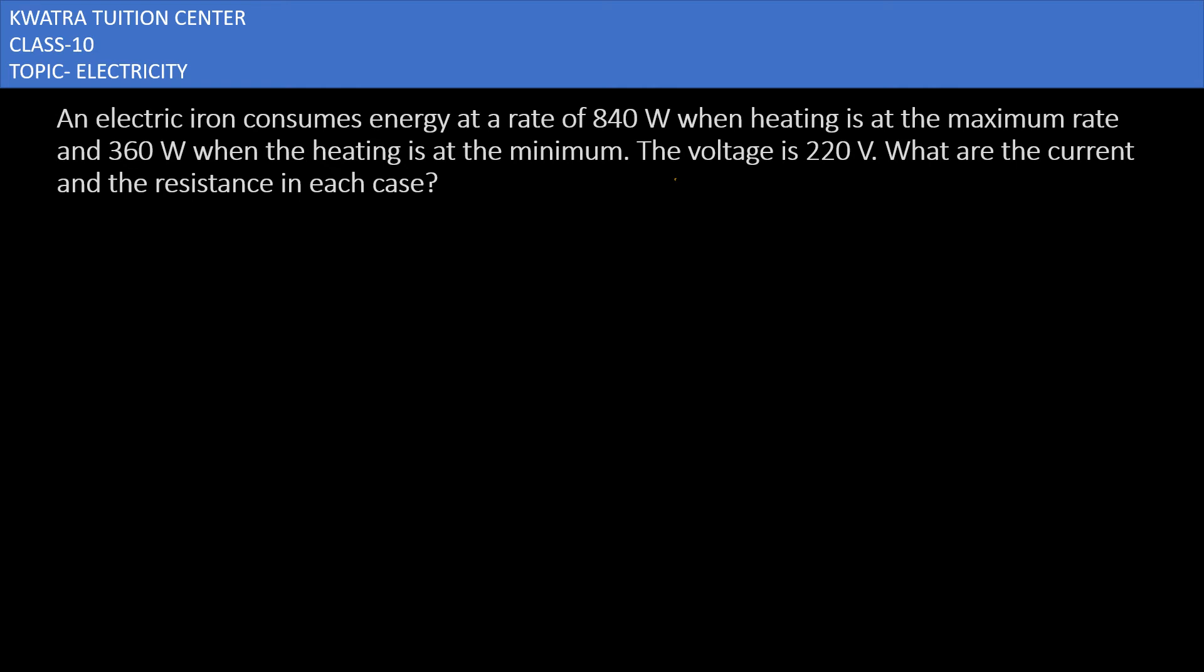Let's start with a new question. It says an electric iron consumes energy at a rate of 840 watts when heating is at the maximum rate, and 360 watts when the heating is at minimum. The voltage is 220 volts.